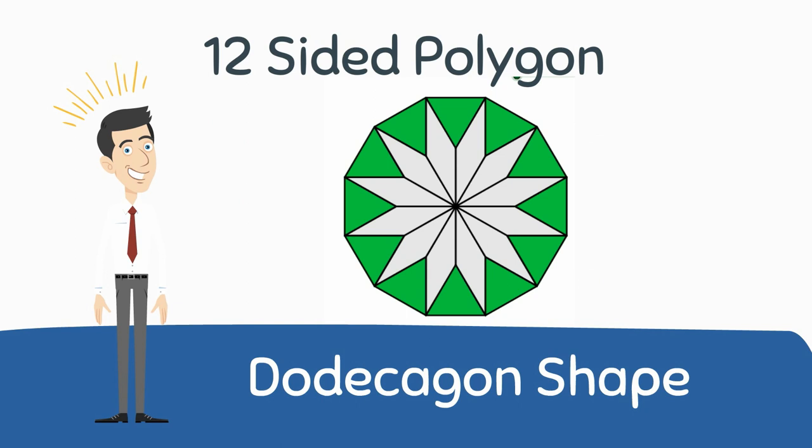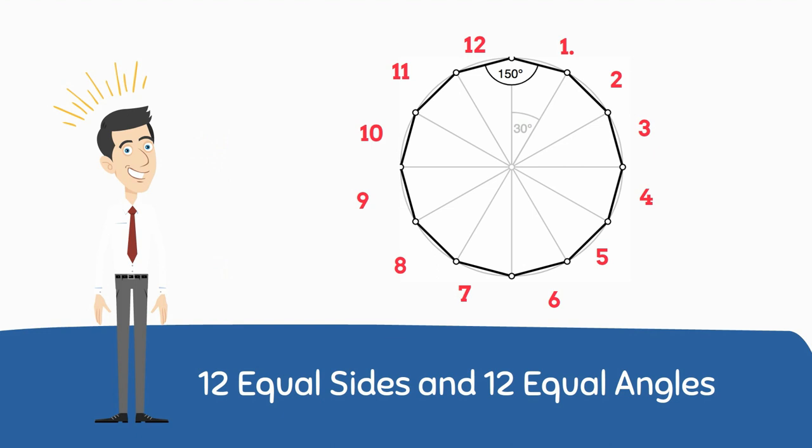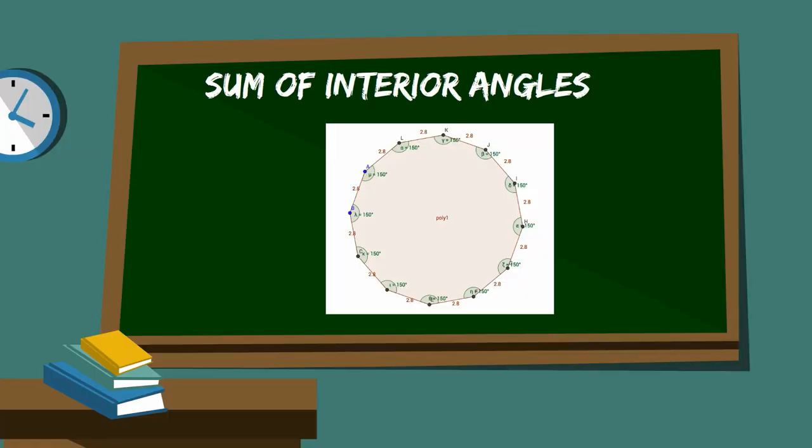Circles and shapes that include curves are not polygons. A regular dodecagon has 12 equal sides and 12 equal angles.